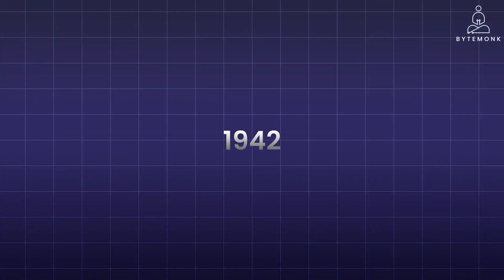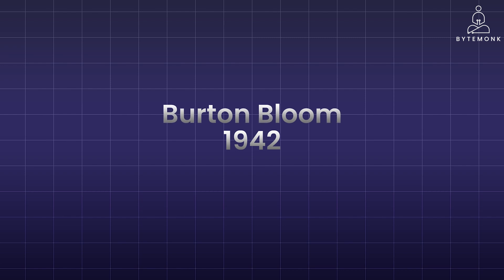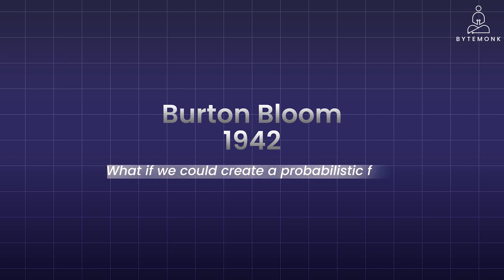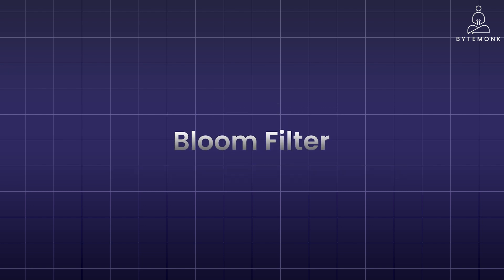Then, in 1942, a computer scientist named Burton Bloom had an idea. What if we could create a probabilistic filter — a kind of shortcut that tells us with high accuracy if something might exist, even if it doesn't guarantee it's there? This was the birth of the Bloom filter.